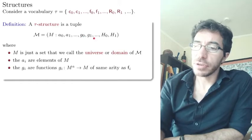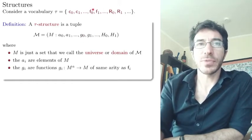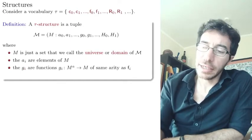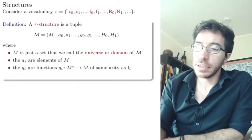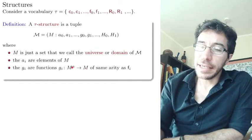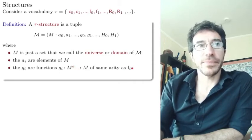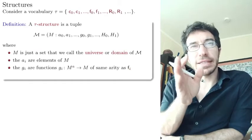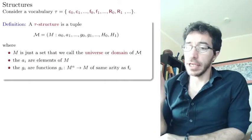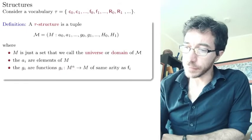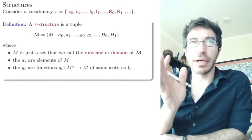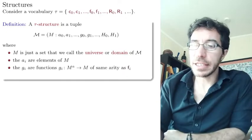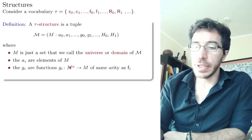Then some functions. The same number of functions here as we have function symbols. And the function Gi is going to be an operation, actually. It's going to take a tuple of size a and give you one element of M. And this a here is going to be the same as the arity of the symbol Fi. So this Gi is trying to interpret the symbol Fi. So it's going to have the same number of inputs, right? And the same number of G's as there are F's. The idea here is that it's very good to understand the difference. F here is a symbol. It's just a character that we use. And G here is an actual function. It's an actual function that goes from this set of tuples to M.